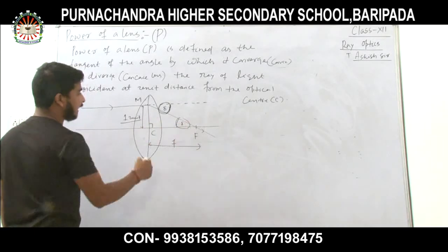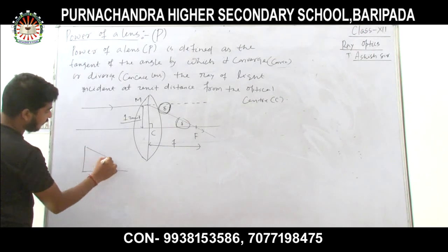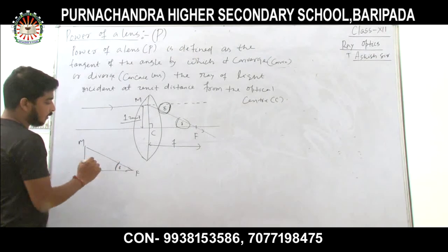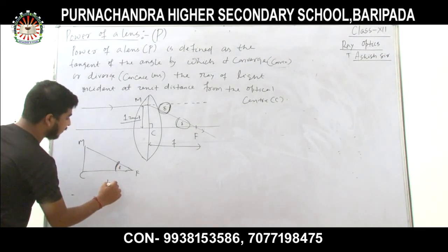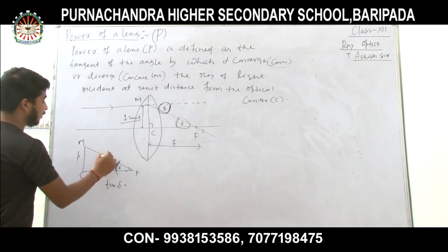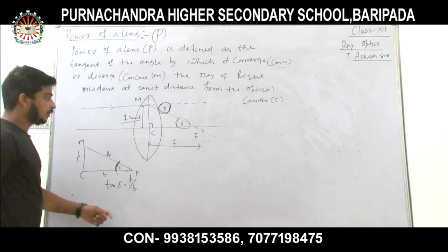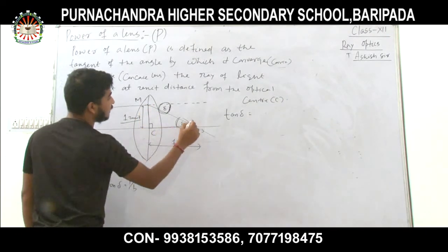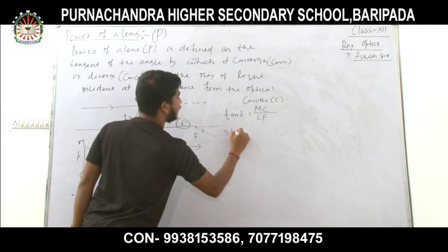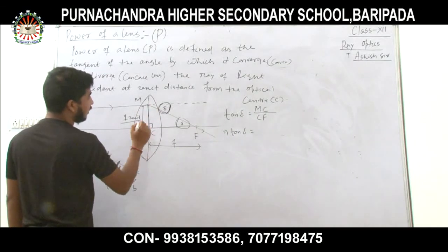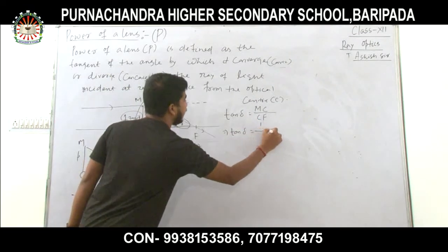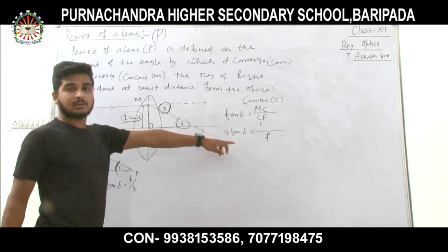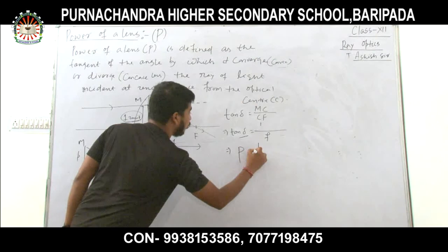In the right-angle triangle MCF, this angle is delta. Tan delta = MC / CF. If MC equals 1 unit (unit distance from the optical center), then tan delta = 1 / F. Since power is defined as the tangent of the angle of deviation, P = tan delta = 1/F.